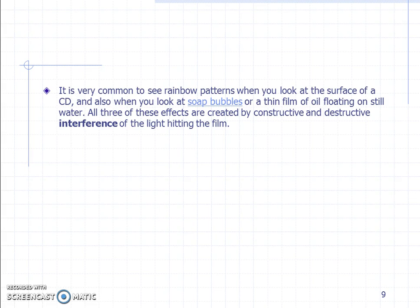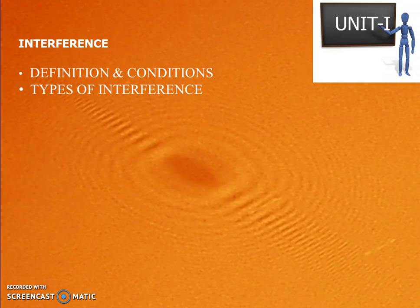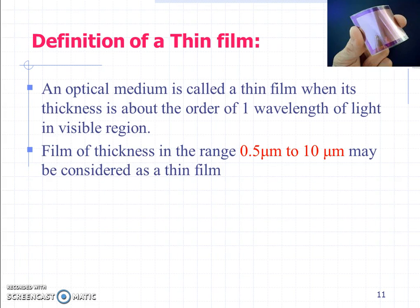Now we are going to read the definitions and conditions, and what are the types of interference. One is wavefront splitting, as in Young's double-slit experiment. The other is amplitude splitting, which gives interference patterns in thin films and interferometers. An optical medium is called a thin film when its thickness is about the order of one wavelength of visible light in that region.